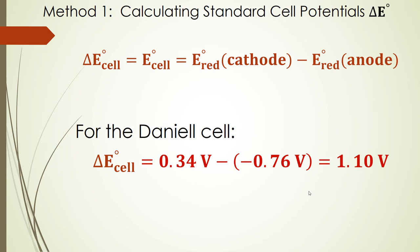To calculate the standard cell potential ΔE°cell — also written ΔE° or E°cell, all equivalent — we take the reduction potential for the cathode and subtract the reduction potential for the anode. For the Daniell cell: E°cell = 0.34V (copper cathode) − (−0.76V) (zinc anode) = 0.34 + 0.76 = 1.10V overall.